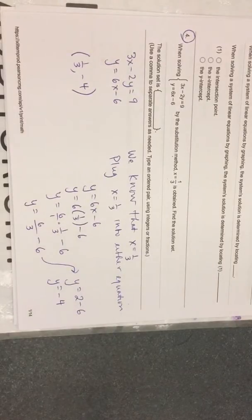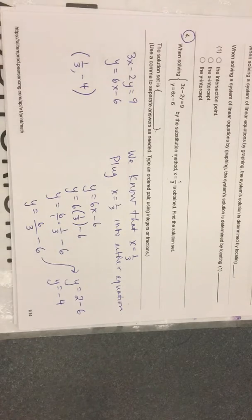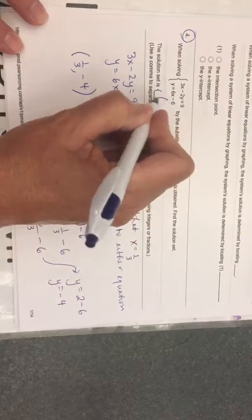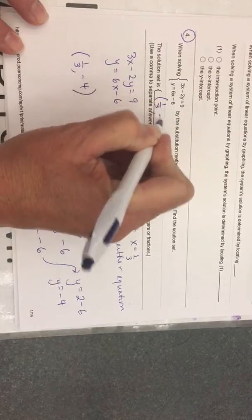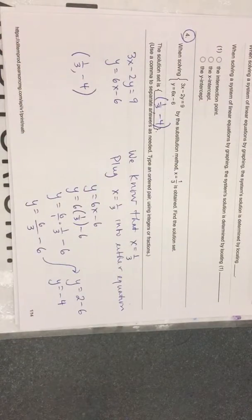The braces that they gave, the solution set is, the braces are read as the set of ordered pairs one-third comma negative 4. There's only one ordered pair in the solution set.